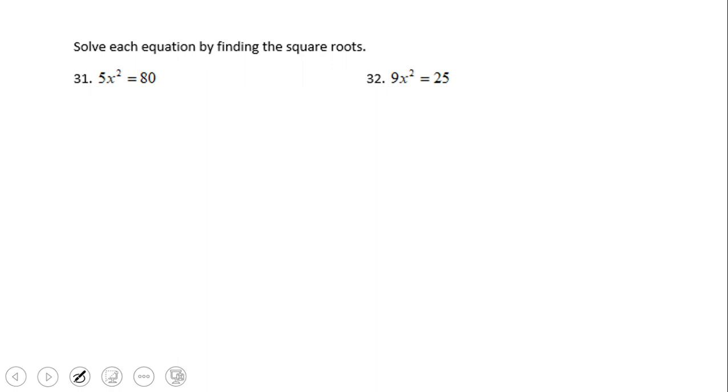Let's take a look at number 31, and we're going to do 32. What is this method about? You see we have 5x² = 80, so obviously you want to solve for x² first, which means you're going to divide by 5.